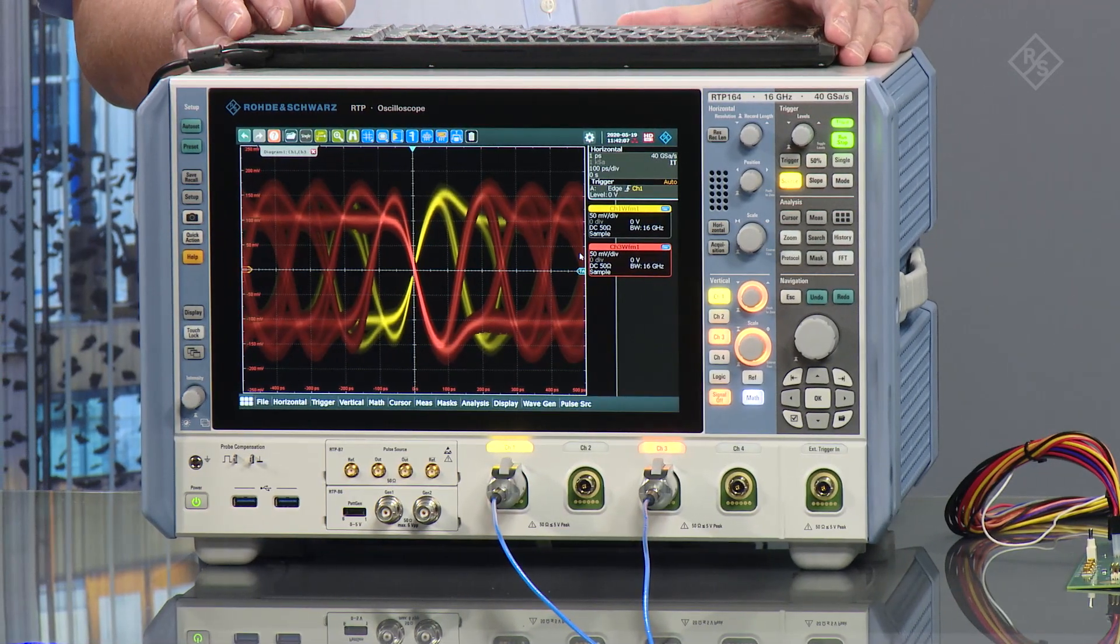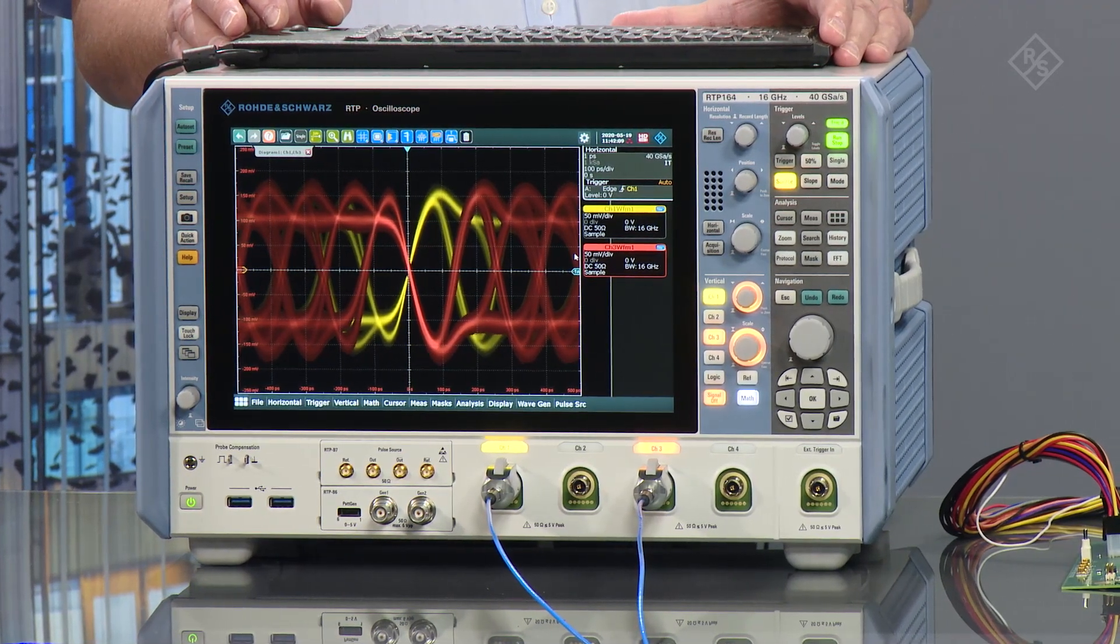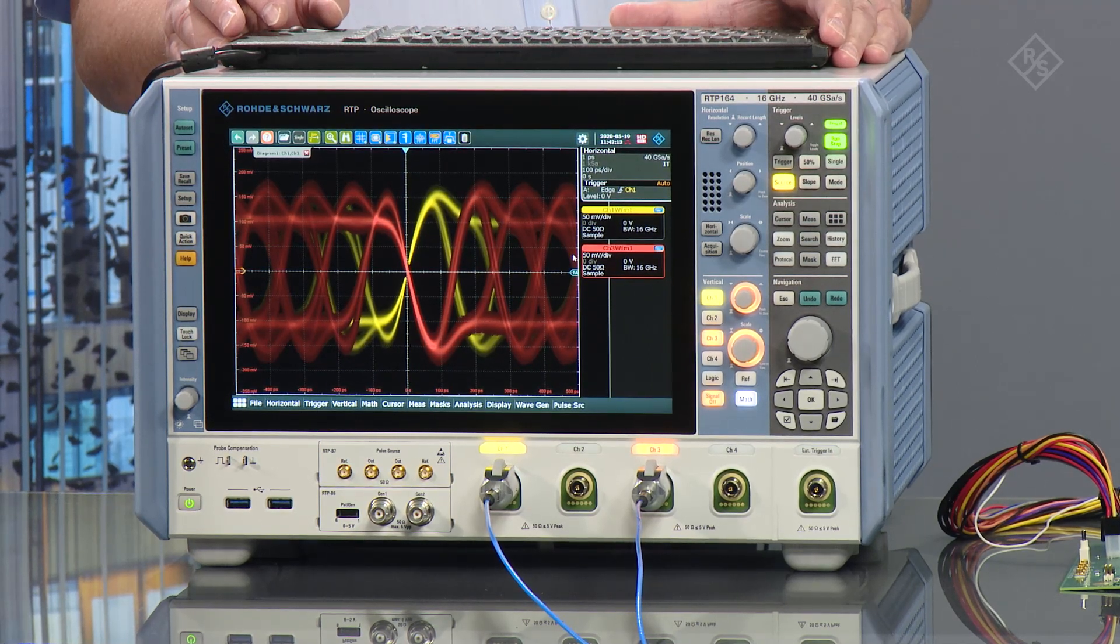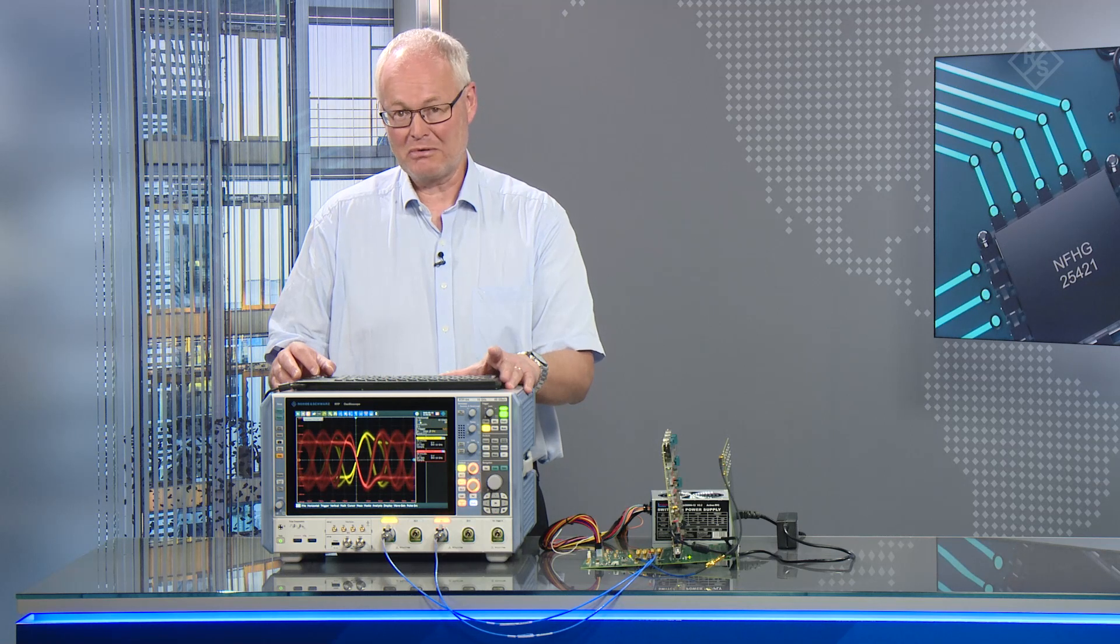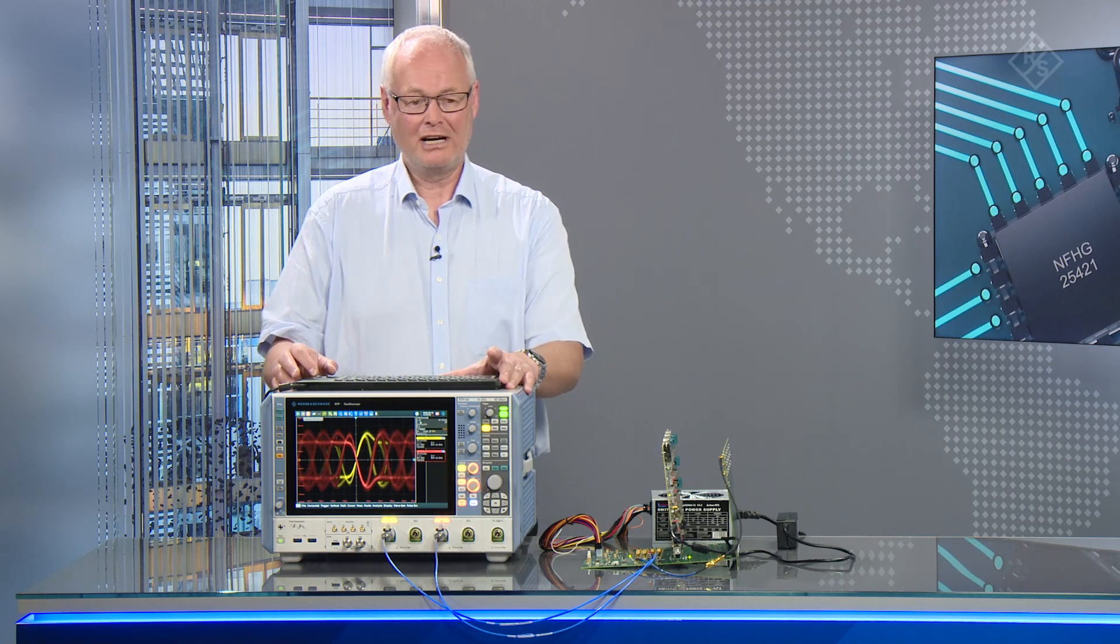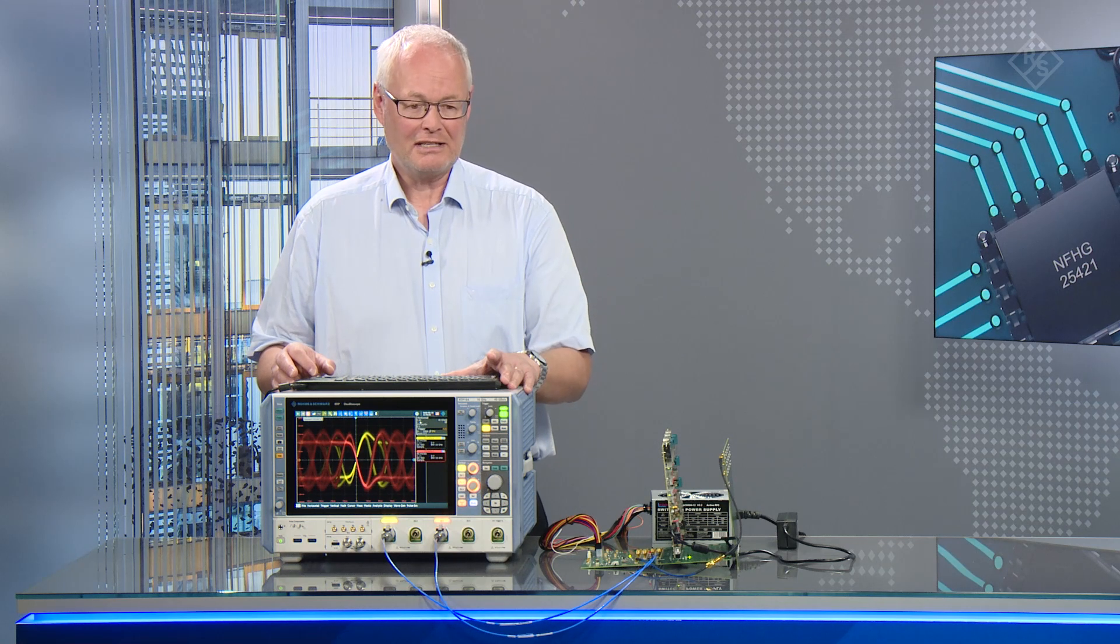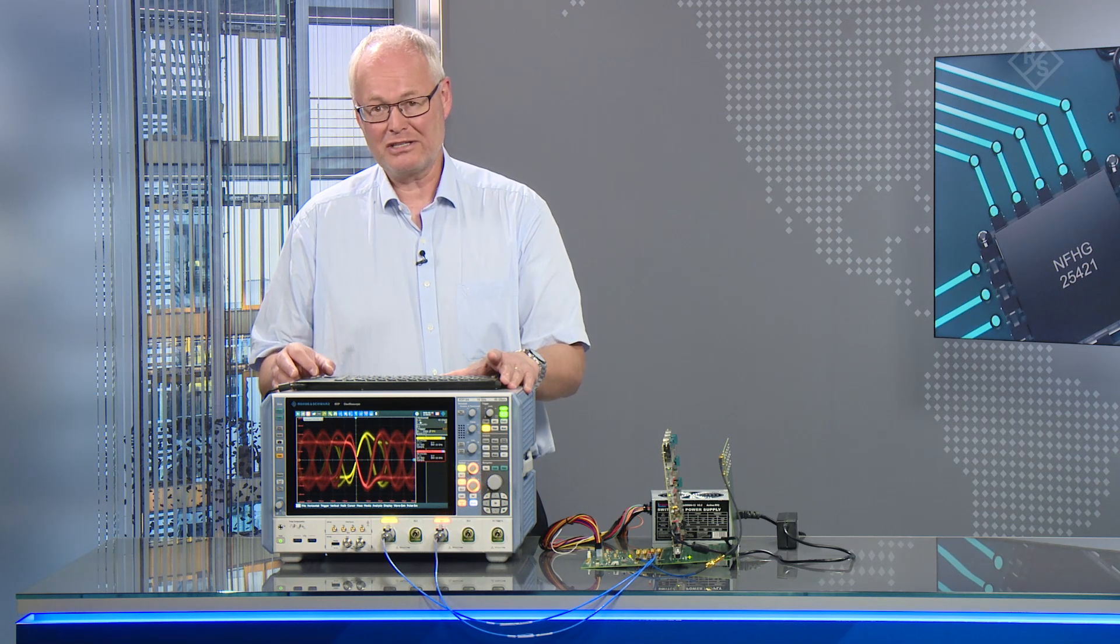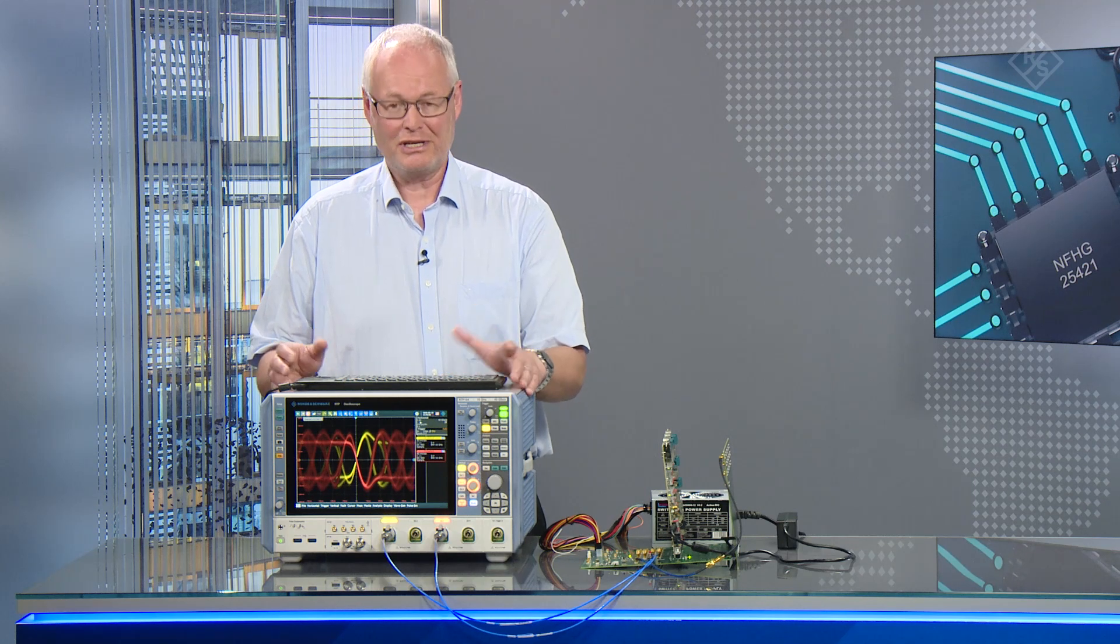So we see in the scope displayed the P and the N of lane 0. We have two signals but this is not of our interest. In reality we want to see the differential signal of P minus N displayed as a signal trace and then set up the right time basis to view the eye. Let's do that now in detail.